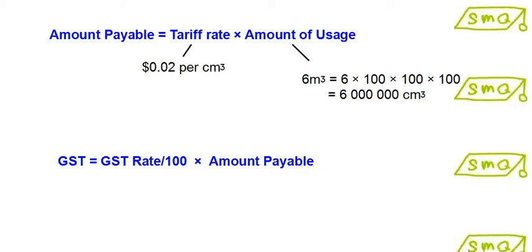To calculate the amount payable for utility bills, we have to take the tariff rate multiplied by the amount of usage.